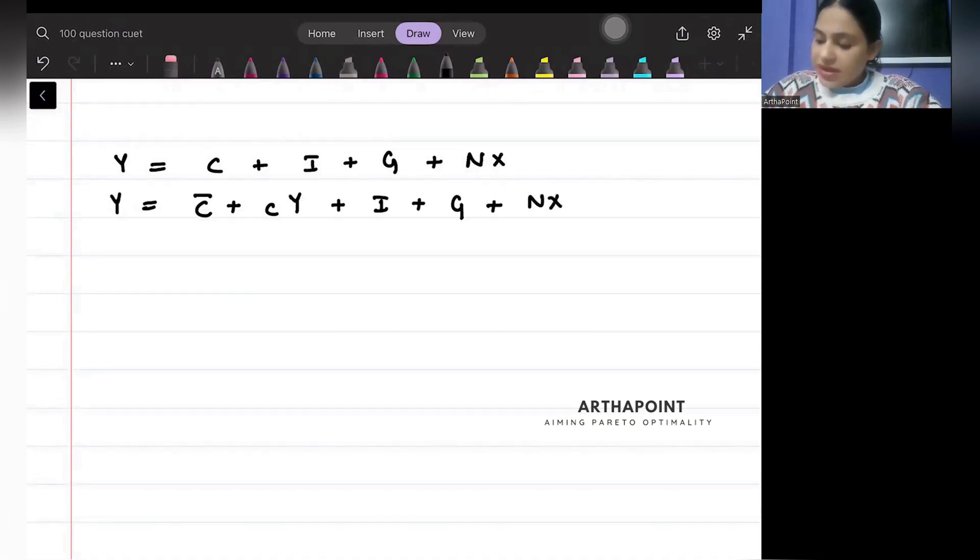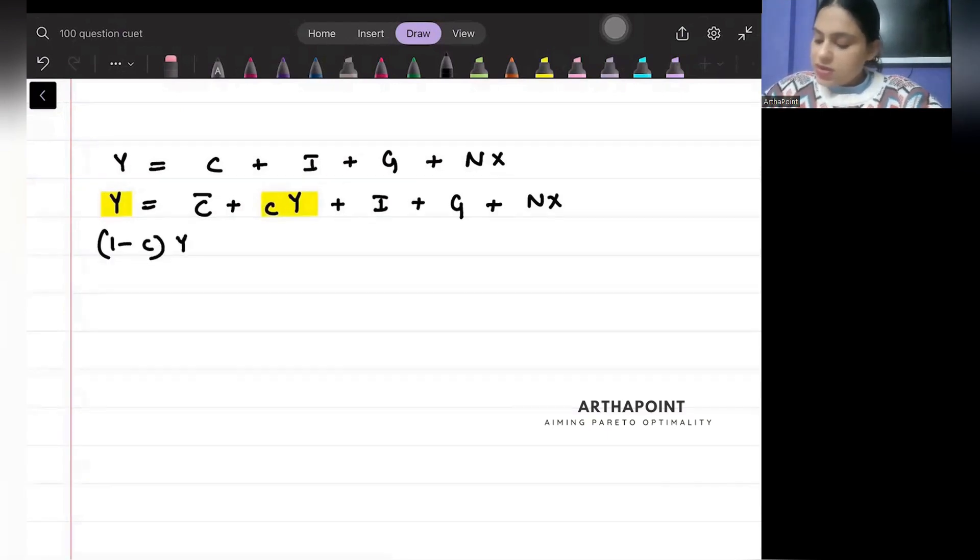I can take all Y terms together. So I can say (1 - c)Y = C bar. I am just taking it here. Is equal to C bar + I + G + NX.